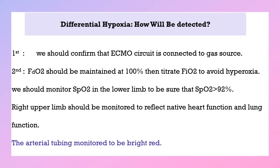How can we detect differential hypoxemia? For any hypoxic patient on ECMO, first confirm the ECMO circuit is connected to a gas source. FiO2 from the ECMO side should be maintained at 100%, then titrated to avoid hyperoxia. Monitor SpO2 on the lower limb to ensure it's above 90%, and monitor the right upper limb as it reflects native heart and lung function. The arterial tube should appear bright red, with color differentiation between arterial and venous tubes.